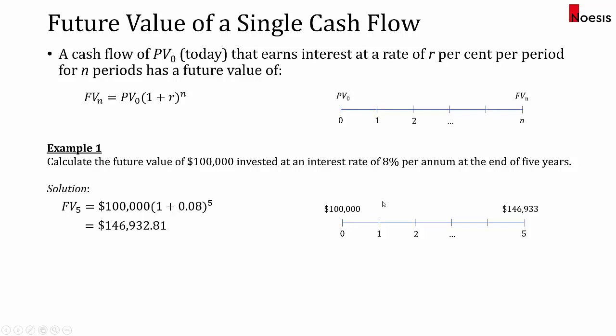From another perspective, if you borrow $100,000 for five years at a rate of 8%, at the end of year 5 you will have to pay back $146,933.